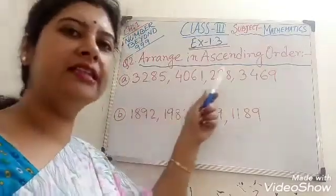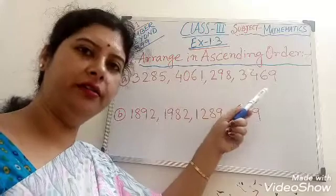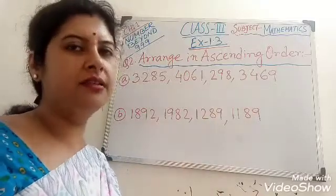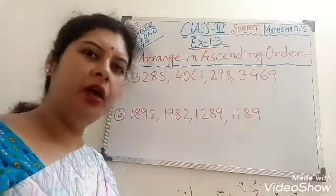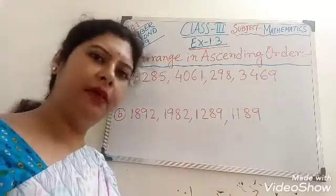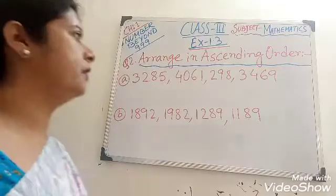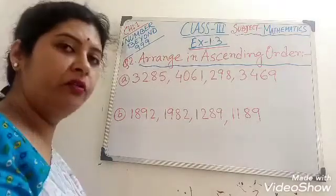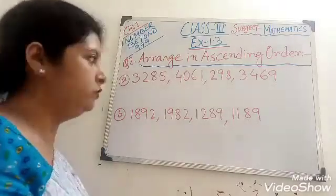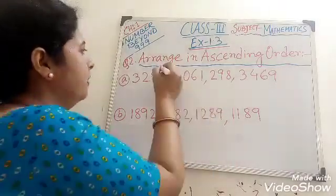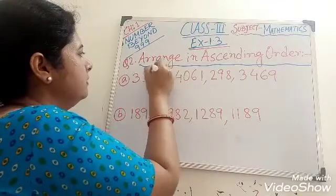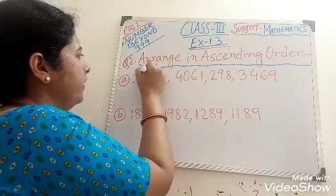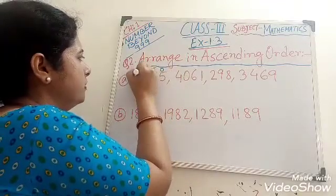Arrange in ascending order. Ascending order means smaller to bigger. Now first of all, we put down place values: 1's, 10's, 100's, 1000.